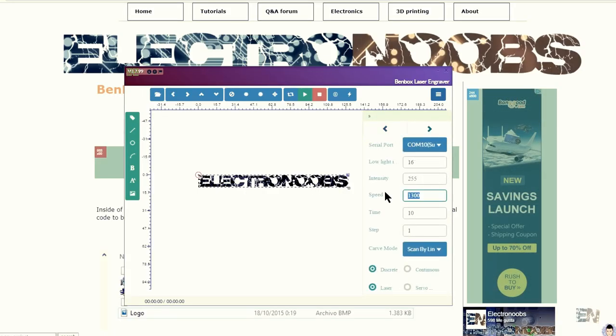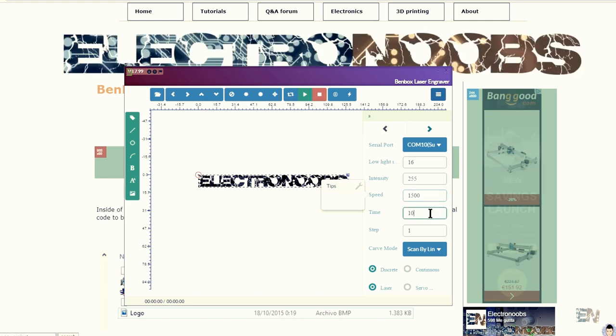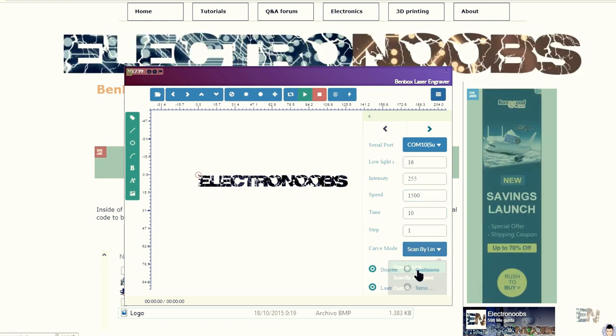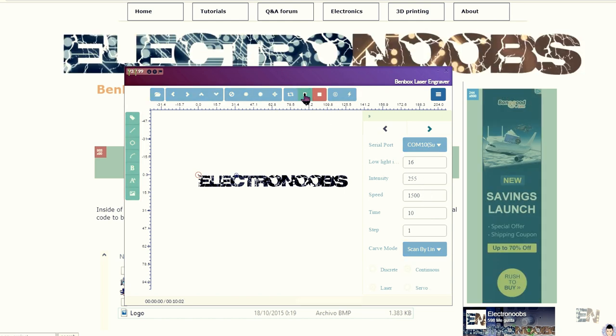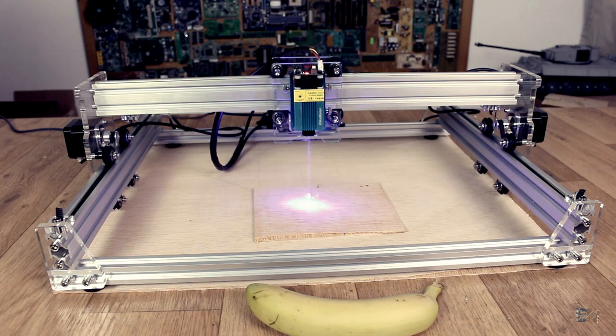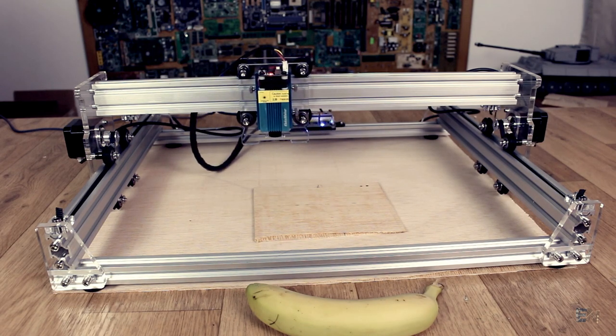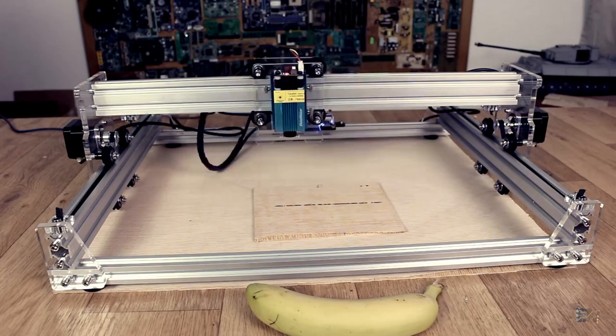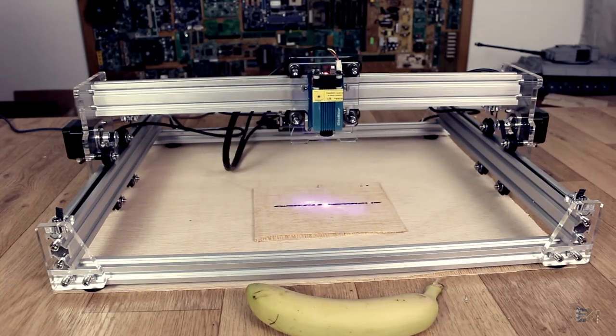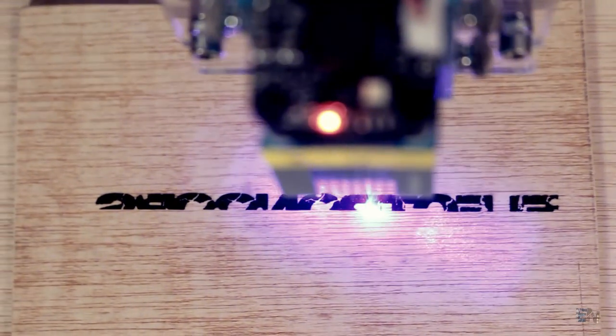Change your settings here and click play and the machine will start engraving. Make sure you open a window or have a fume extractor since this will create a lot of smoke, especially when you are engraving wood. The print is going very nice. So there you go, I've burned my first logo on a piece of wood. You could play with the machine settings and try other materials.